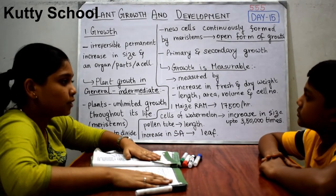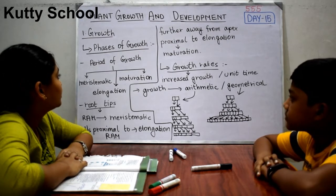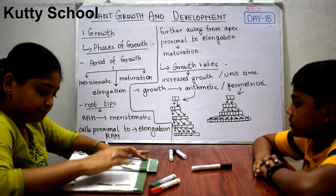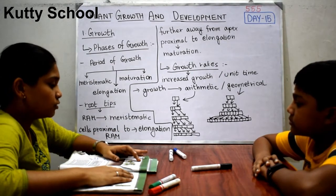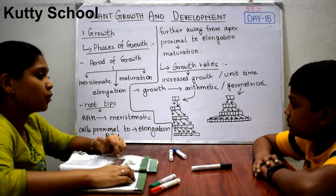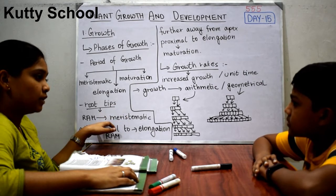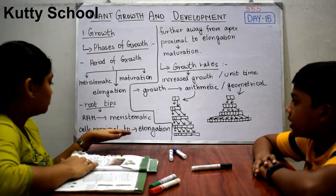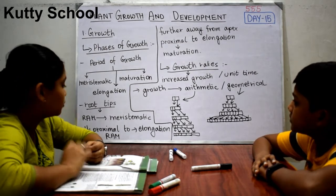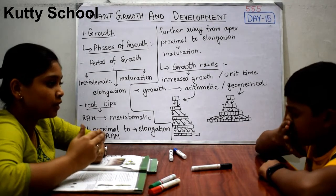Next is the phases of growth. The period of growth is generally divided into three: the meristematic period, elongation period, and maturation period. These three phases are well seen in root tips. The cells near the root apical meristem are in the meristematic phase; cells proximal and upward are in the elongation phase; and further away is the maturation phase. These regions were also studied in the anatomy of flowering plants.